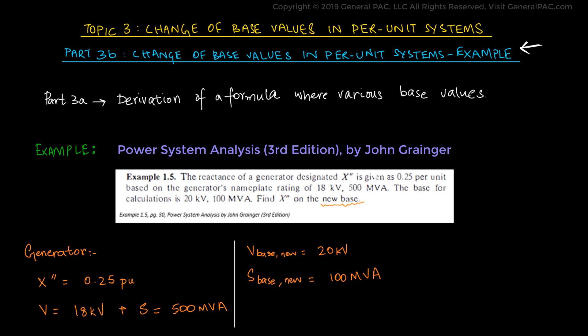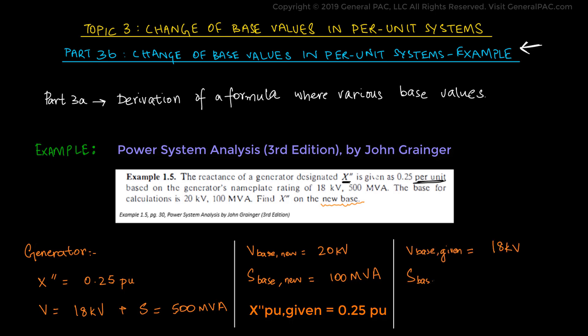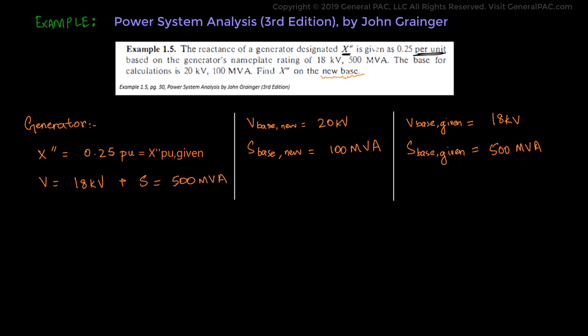We can see that the reactance X double prime is specified in per units. We can understand that this per unit value, X double prime per unit given, is equal to 0.25 per unit. We also know that the rating of the generator given are taken from the base value as we learned in the earlier topics of this series. So the given X double prime value is calculated using the given base values: V base given equals 18 kV and S base given equals 500 MVA. To calculate the new value of X double prime in per units, we use the formula derived in Part 3a.